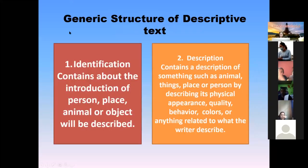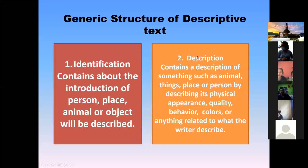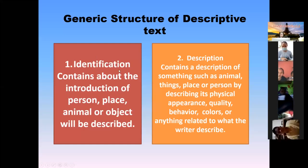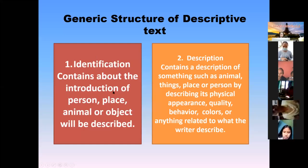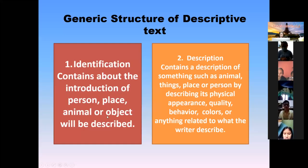For the generic structure of descriptive text. The first is identification, and then the second is description. So what is identification? You can see — identification contains about the introduction of person, place, animal, or object will be described.